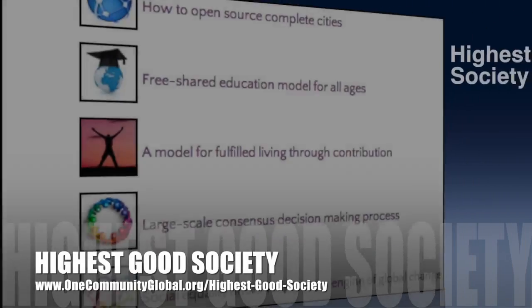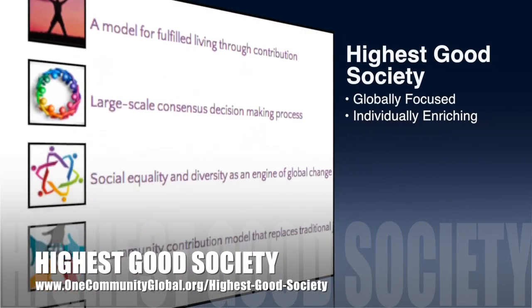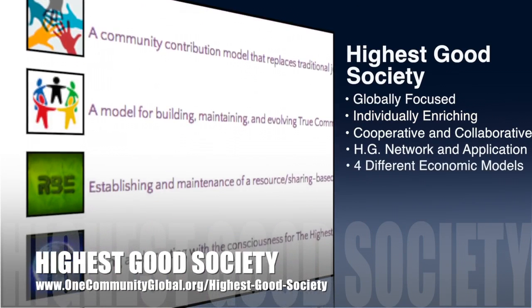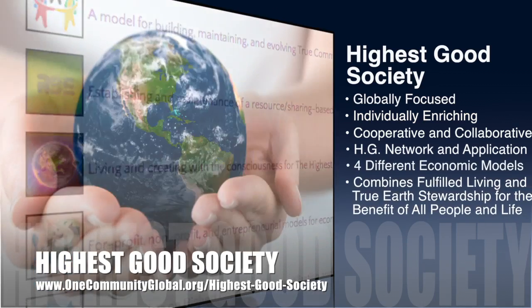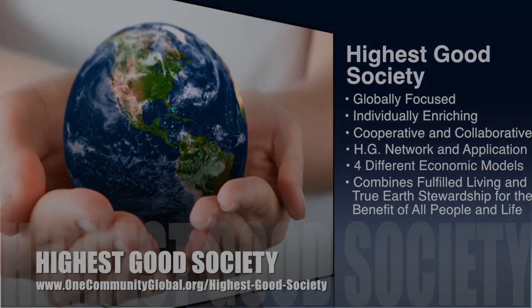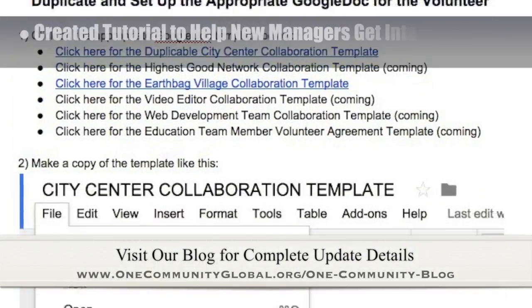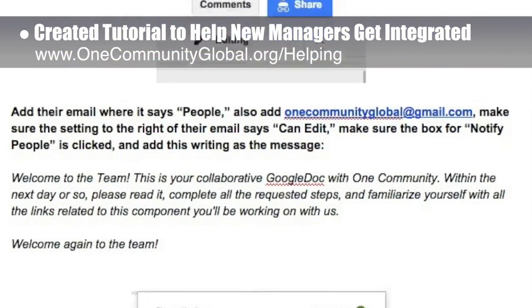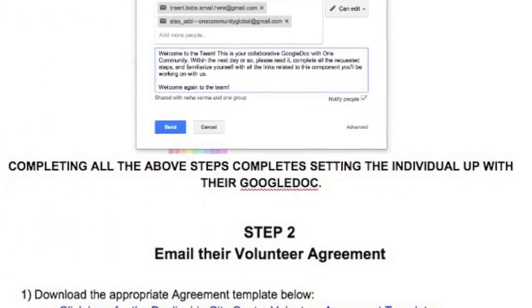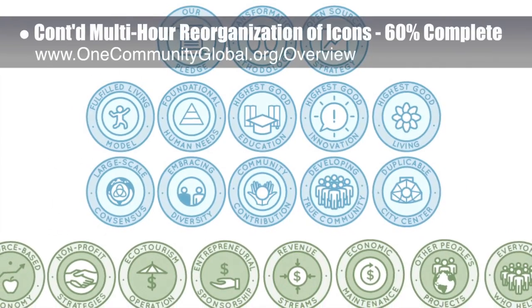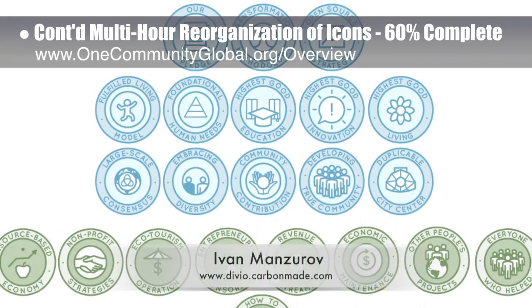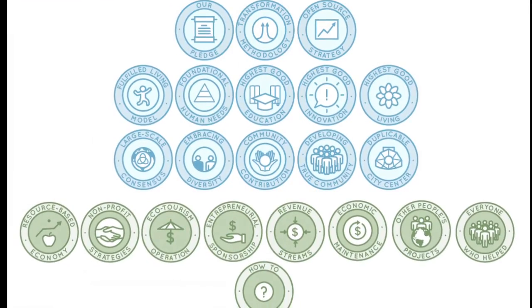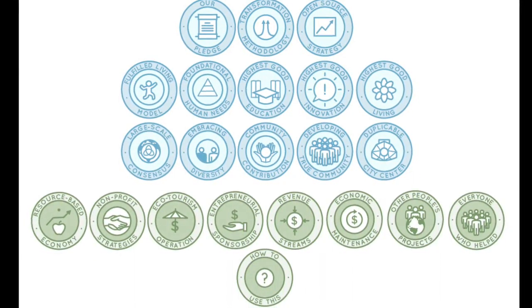The One Community approach to highest good society is globally focused, individually enriching, cooperative and collaborative, includes a highest good network and application, four different economic models, and combines fulfilled living and true earth stewardship for the benefit of all people and all life on this planet. This last week, the core team created a new onboarding tutorial to help new managers and teams get integrated into our system as easily and fluidly as possible. We also made final edits and continued the multi-hour reorganization of the icons designed by graphic designer Ivan Monzarov. The icons finished this week were the highest good society and highest good economics icons. We'd say we are now about 60% done with this graphics task.